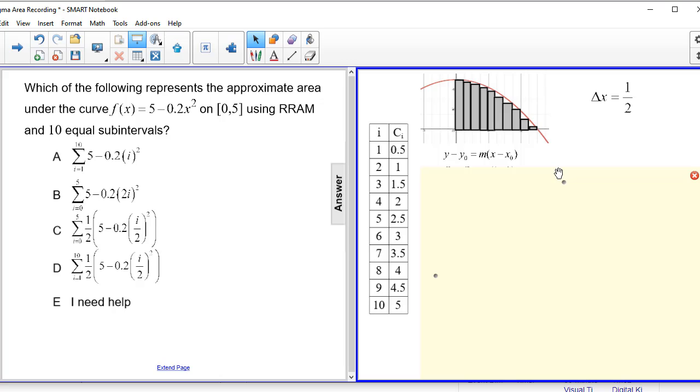And one way we can do that is to use a linear equation from our earlier math days: y - y₀ = m(x - x₀). Relating this to sequences, I'm going to rewrite this as c_i - c₁ = m(i - i₁).